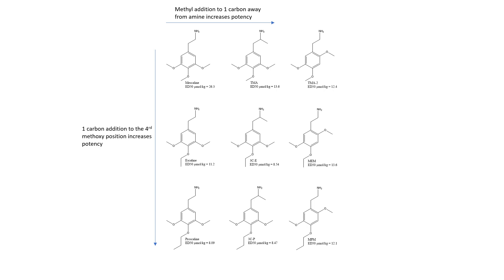Lastly, we can look at what happens when we change the third position methoxy group and put it on the second carbon. Let's look at going from 3CP to MPM. We see that moving the third methoxy position to the second position decreases the potency, but there's actually one exception to this. It's going from TMA to TMA2. So what we can gather or conclude is that the most potent drug is proscaline, closely followed by 3CP, closely followed by 3CE. And we have now developed a structure-activity relationship looking at how making derivatives of the drug increases its potency.